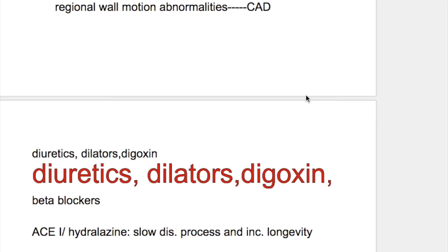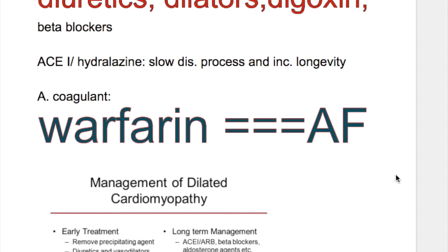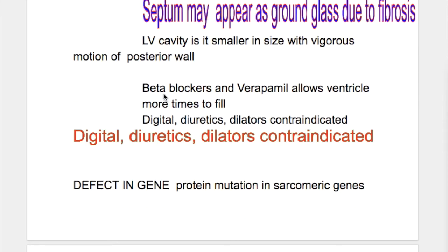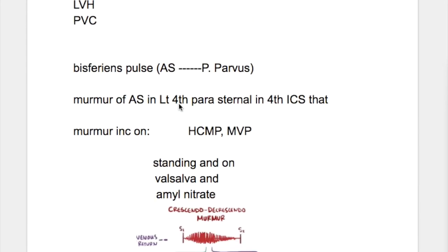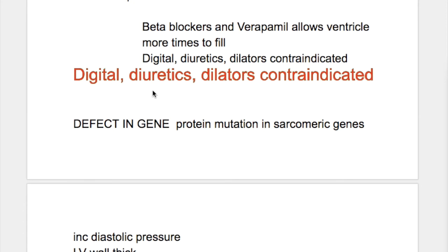Treatment of dilated cardiomyopathy includes digitalis, diuretics, and dilators, along with beta blockers, ACE inhibitors, hydralazine, and warfarin. ACE inhibitors and hydralazine slow the disease process and increase longevity. Warfarin is used because atrial fibrillation occurs in dilated cardiomyopathy. Treatment of hypertrophic cardiomyopathy includes beta blockers, verapamil, and amiodarone. Digitalis, diuretics, and dilators are contraindicated in hypertrophic cardiomyopathy.